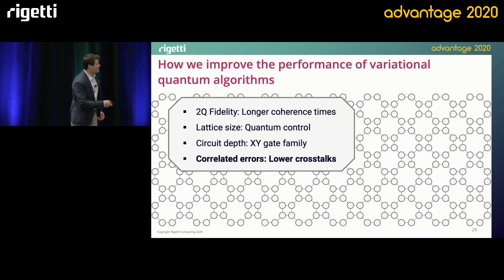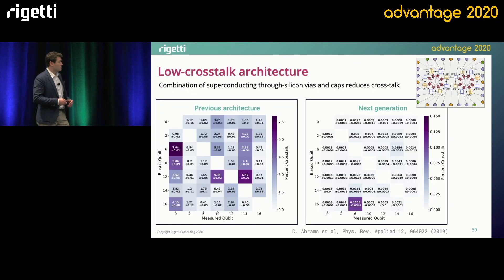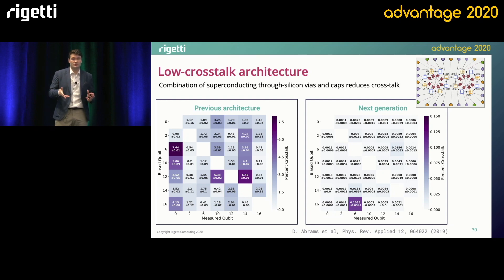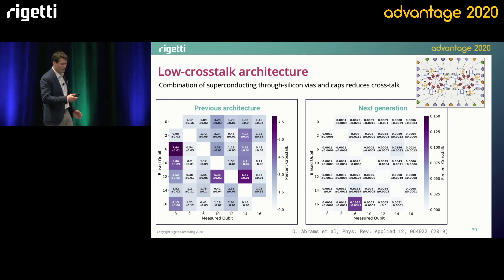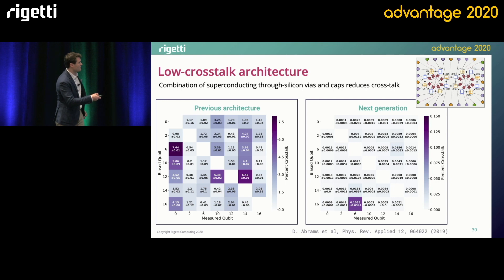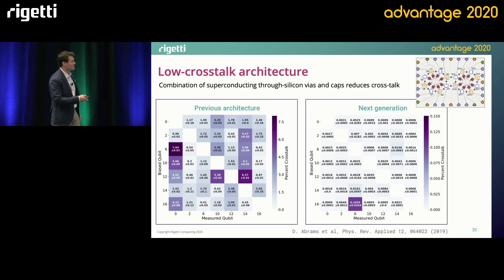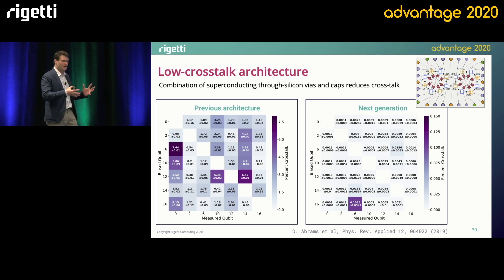My last point is about correlated errors. Correlated errors can arise when a pulse sent to a target qubit causes unwanted rotations on other qubits on the QPU — mainly due to crosstalk. As we scale up, we are developing architectures with low crosstalk and protocols to accurately measure it. On the 16-qubit chip, previous architecture had crosstalk levels in the percent range — too high. With the next generation of architecture, we reduced crosstalk by orders of magnitude, reaching levels that enable simultaneous two-qubit gates with fidelity greater than 99%.